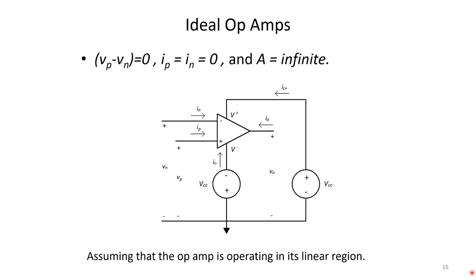Because of this, we're going to make some assumptions for an ideal op amp. We're going to assume that VP minus VN is zero. We're also going to assume that the current flowing into the op amp, IP and IN, the inverting and non-inverting inputs, is equal to zero, and we're going to assume A is infinite. We use these assumptions to analyze op amp circuits, and we're also going to assume that the op amp is operating in its linear region when we make our analysis for the voltage relationships.